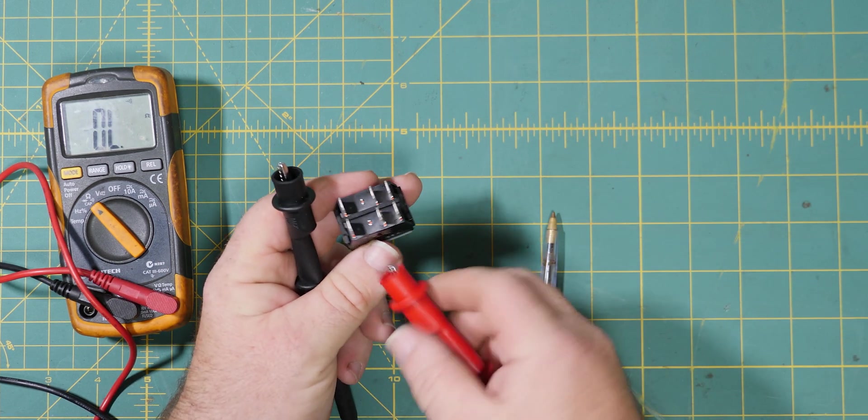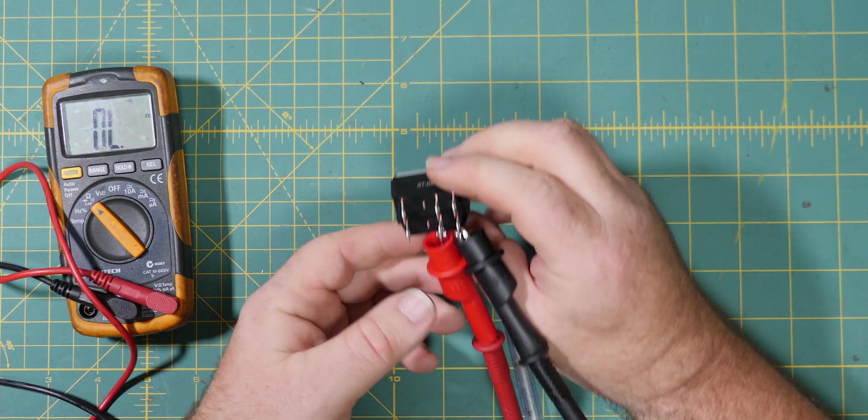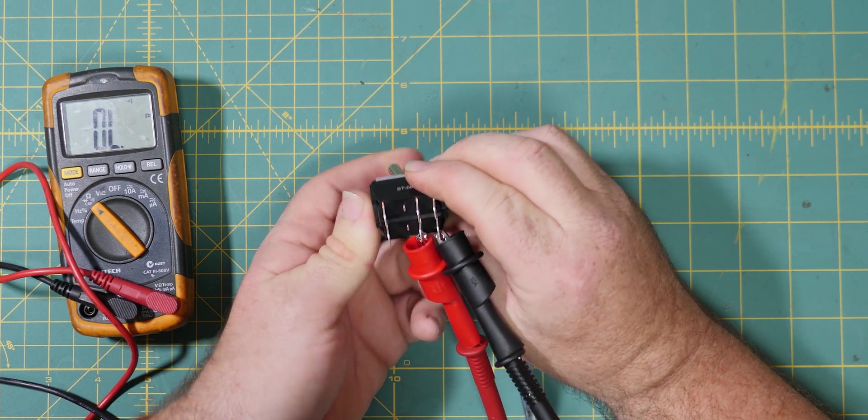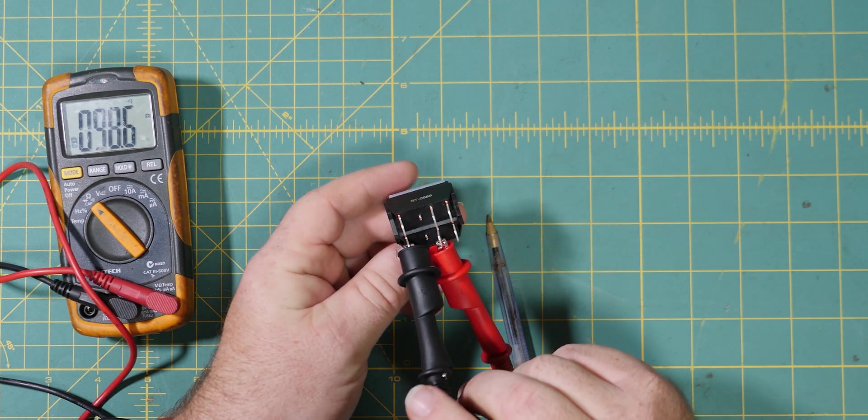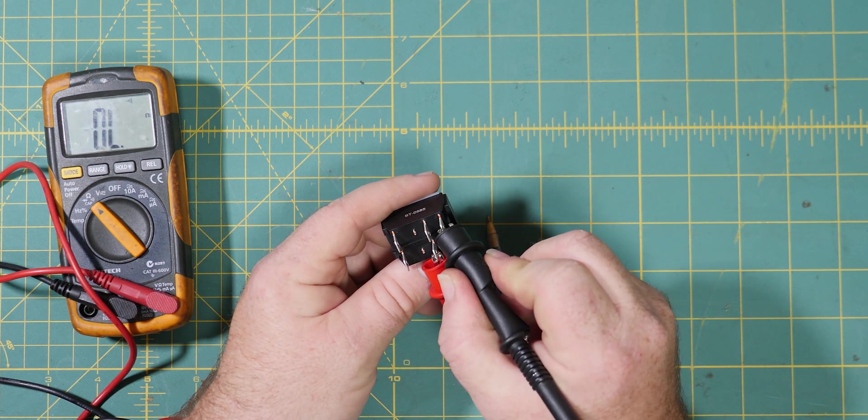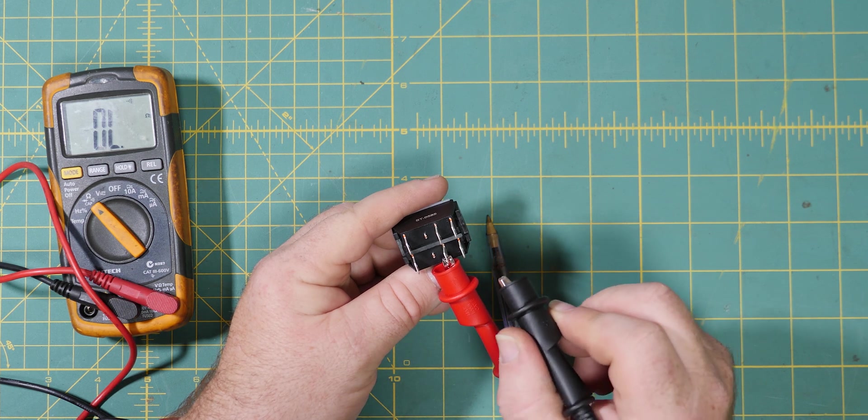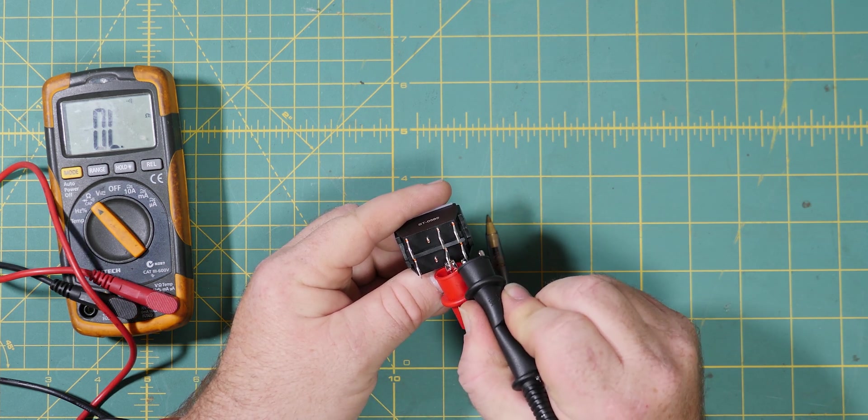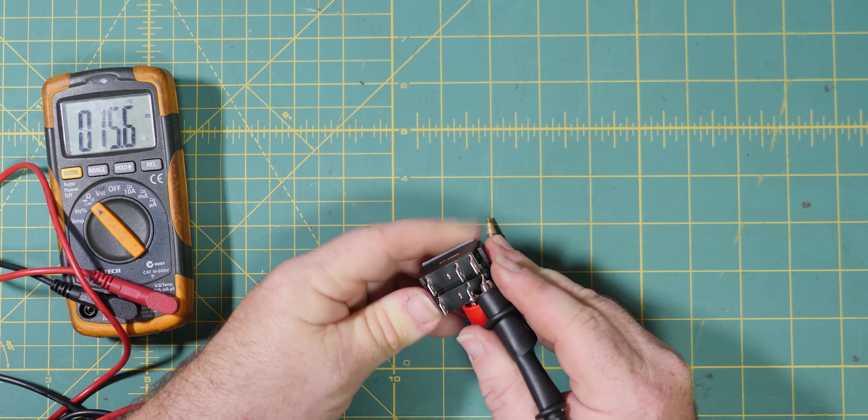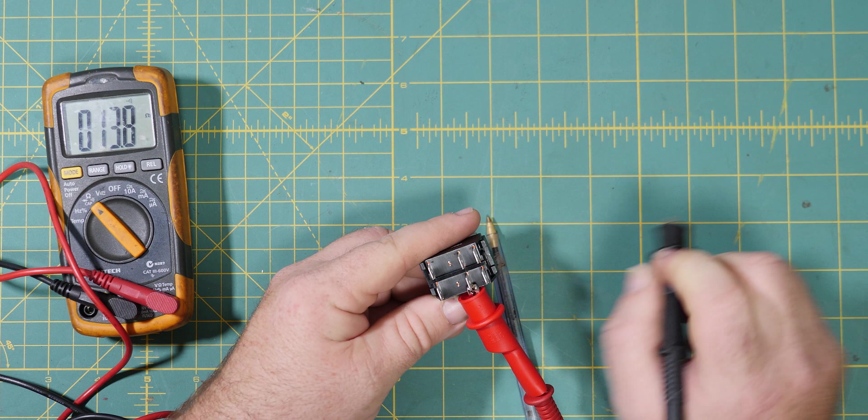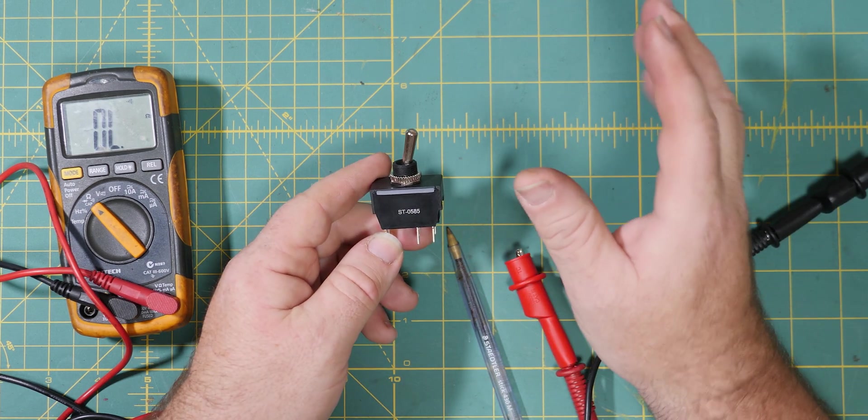I'll connect one probe to here and the other to here. At the moment it's not connecting, but as soon as I hit the switch to the other side it's connected. Now I'll put it back to the off side, but now this side will be connected. It's basically two independent switches worked from one toggle.